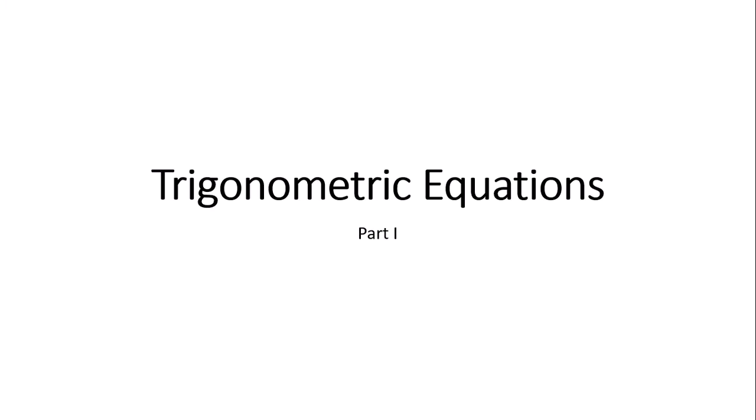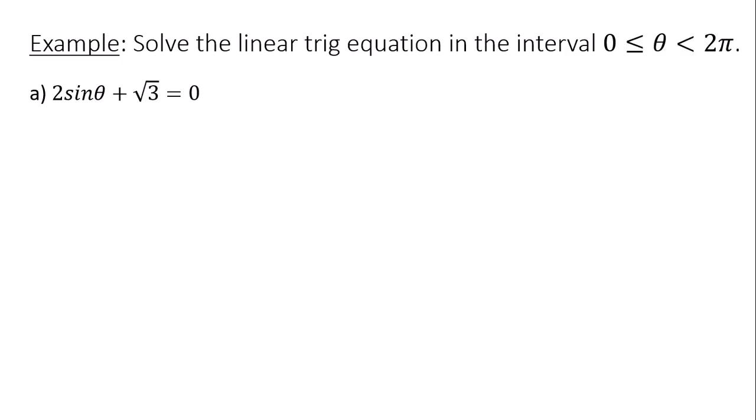Let's talk about how to solve trig equations. An equation is a trig equation if the variable you're solving for is located within a trig function. In my first example, part a, I have 2 sin theta plus square root of 3 equals 0. I want to find the solutions between 0 and 2pi, because there are infinitely many solutions, so we only find the ones between 0 and 2pi.